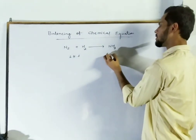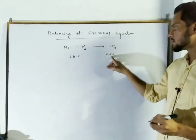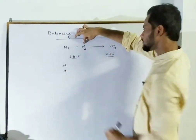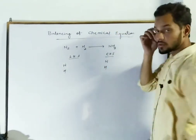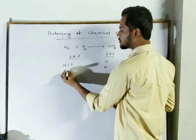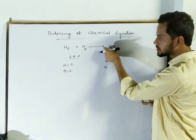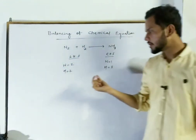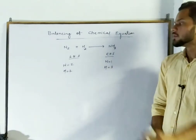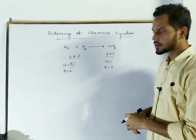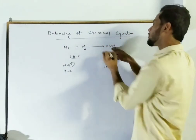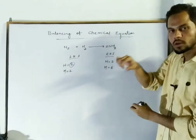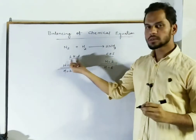First we have to write LHS on the reactant side and RHS on the product side. LHS means left-hand side, meaning reactant side, and RHS means right-hand side, meaning product side. Now check which elements are used: in LHS, nitrogen and hydrogen are present, and in RHS also nitrogen and hydrogen. In LHS we have 2 nitrogen and 2 hydrogen, and in RHS we have 1 nitrogen and 3 hydrogen. So nitrogen on LHS should be multiplied by 2, making the number of nitrogen 2 on both sides.